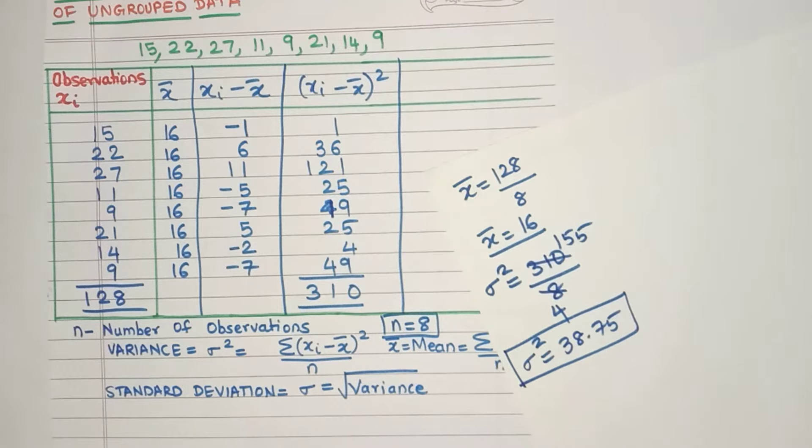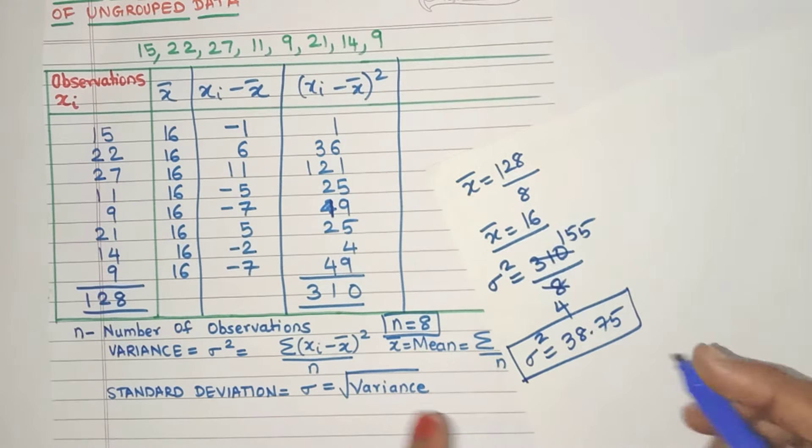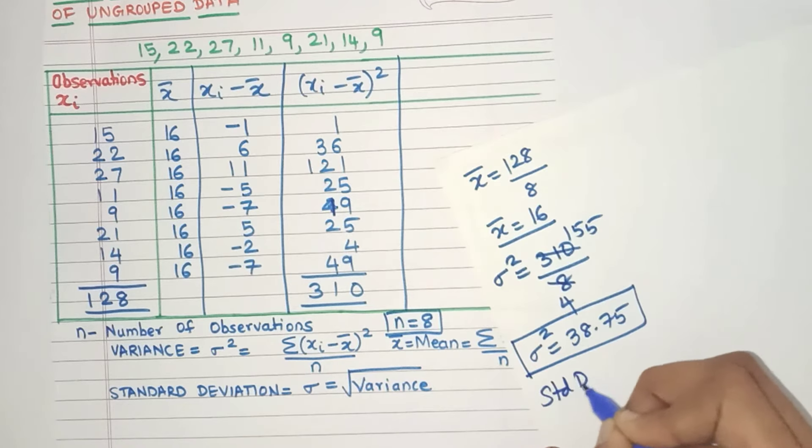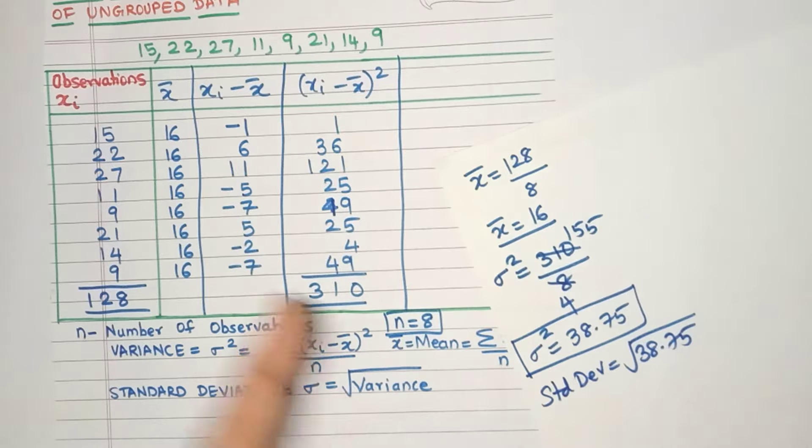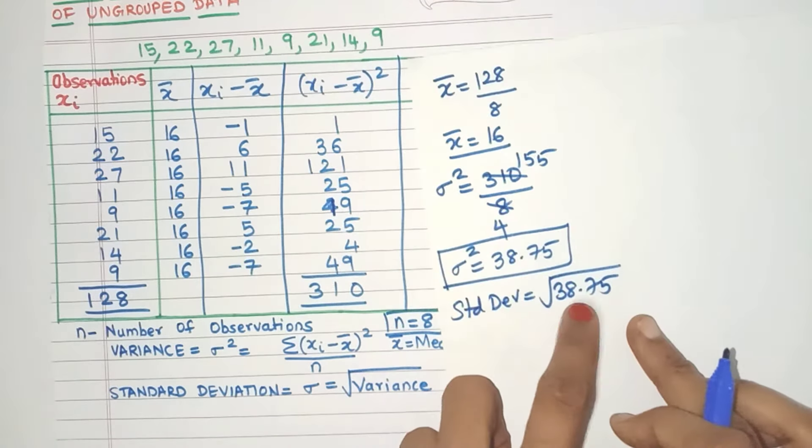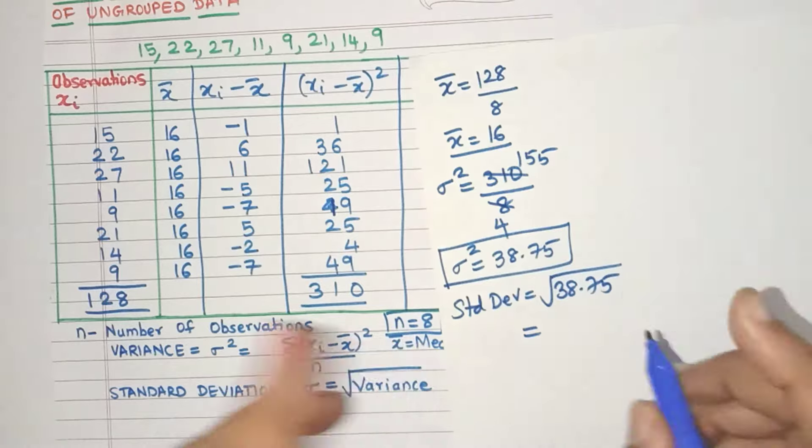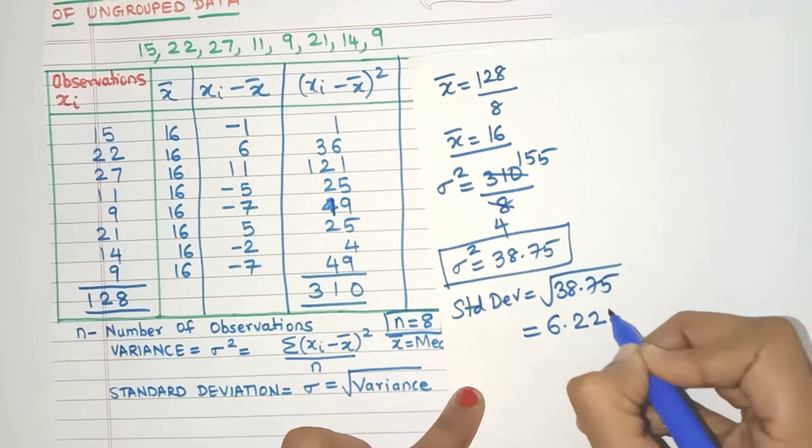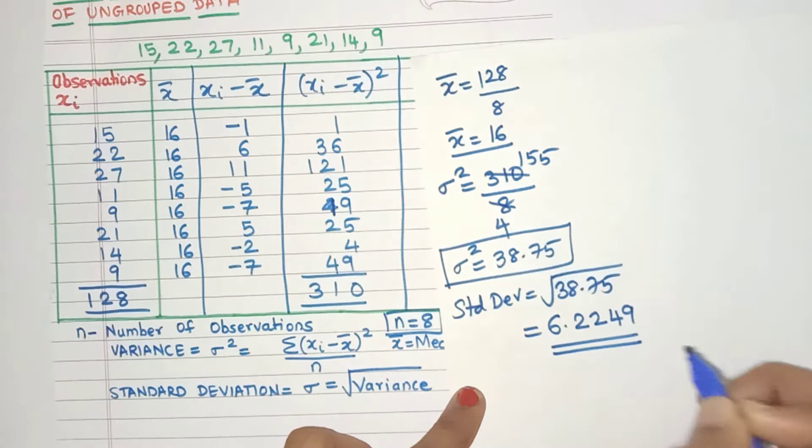Now what about standard deviation? That's very easy. Just find the square root of variance. So standard deviation is the square root of 38.75. Now if you're allowed a calculator, you can check it on calculator or you can even use the tables. Whichever method, you will get the standard deviation as 6.2249. Okay? So this is the standard deviation.